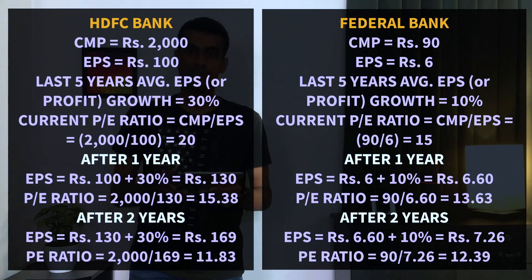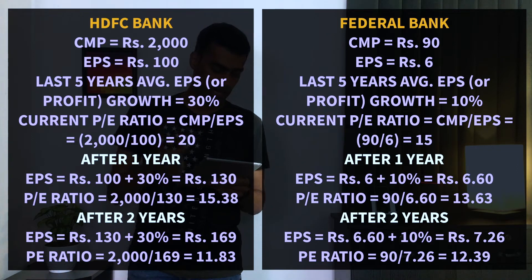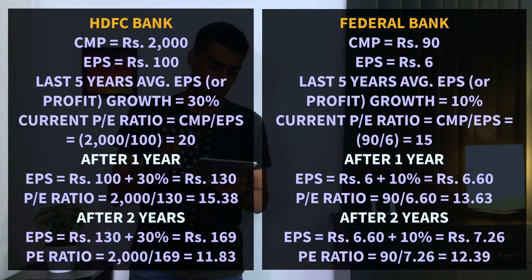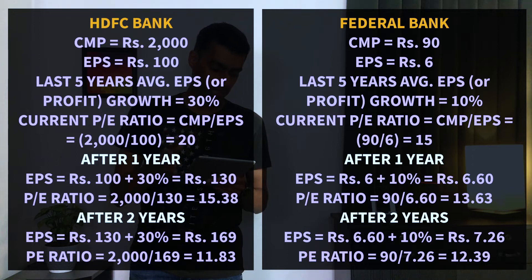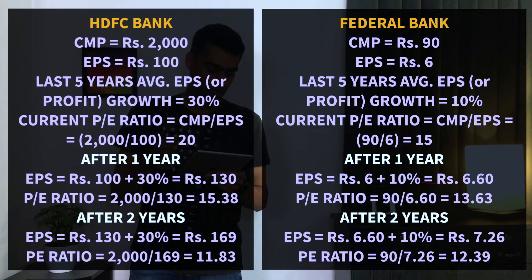Now let's look at Federal Bank's data. The current market price is 90. This year, earnings per share is 6, and the earnings growth rate is 10%. So the current PE multiple is 90 divided by 6, which equals 15.